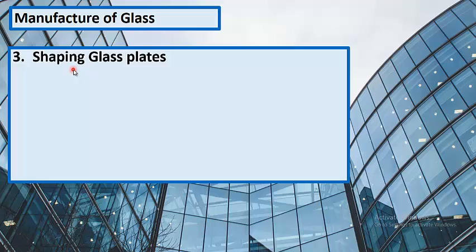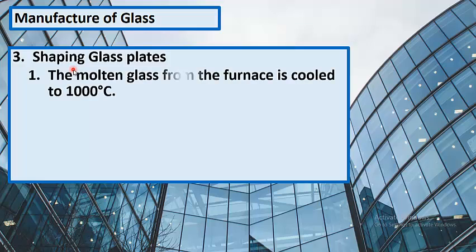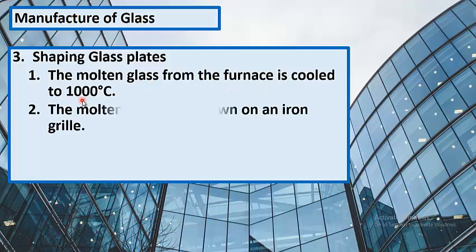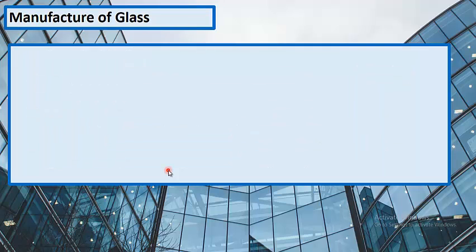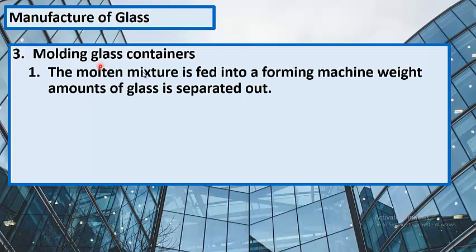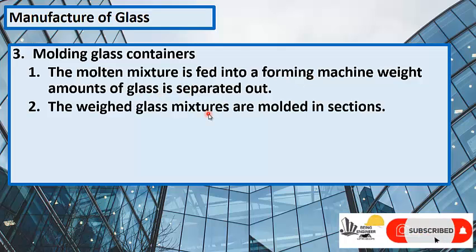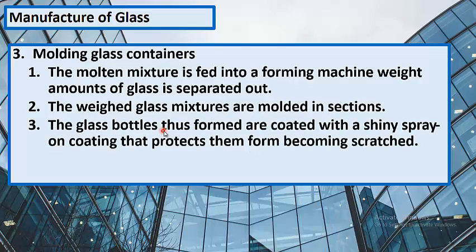The third process in manufacturing is shaping. For glass plates, the molten glass from the furnace is cooled to 1000°C, drawn onto an iron grill, and a roller is rolled on the molten mix to shape thin glass sheets. For molding glass containers, the molten mixture is fed into a forming machine where amounts of glass are separated out, molded in sections, and the glass bottles formed are coated with a shiny spray coating that protects them from scratching.